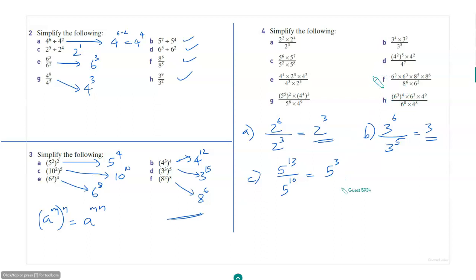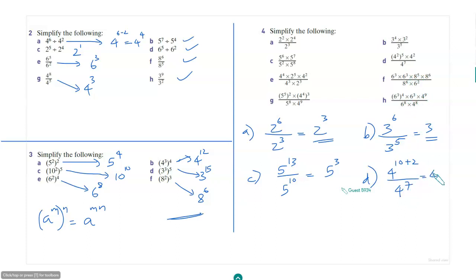How about D? That's 4 to the power of 10, then 4 to the power of 10 plus 2, so 4 to the power of 12 divided by 4 to the power of 7. That will be 4 to the power 5. That will be your answer.